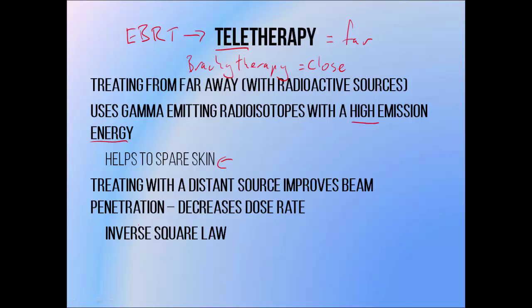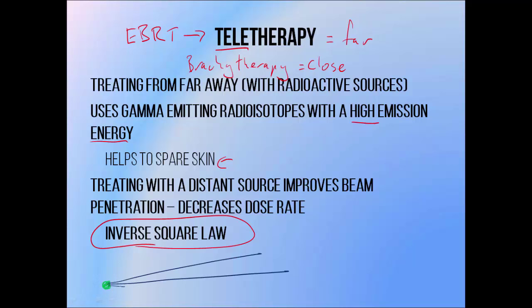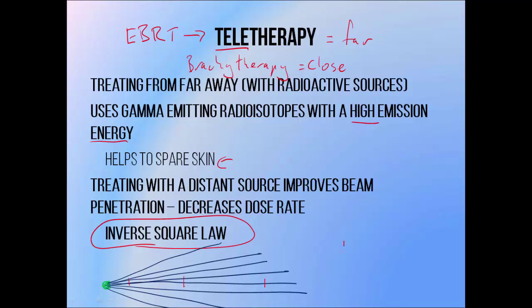Both of these effects are due to something called the inverse square law. This is an important one to know, since it pops up quite a bit in radiotherapy dose calculations, and it also explains why maintaining distance from radiation sources is such an important part of radiation protection. In a very small nutshell, more photons mean more dose, but as we move further and further away from a radiation source, the photons spread out. This means you get fewer photons passing through a given area, and therefore a lower dose. The photons spread out most quickly when you're very close to the source, and less quickly when you're further away.